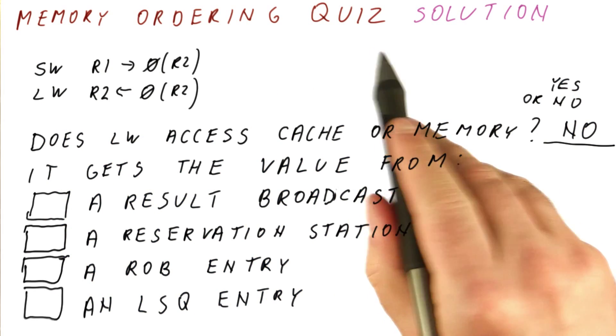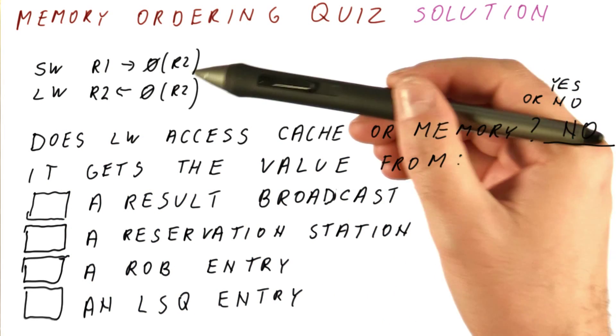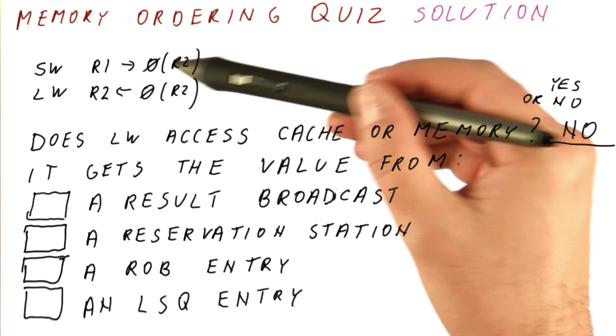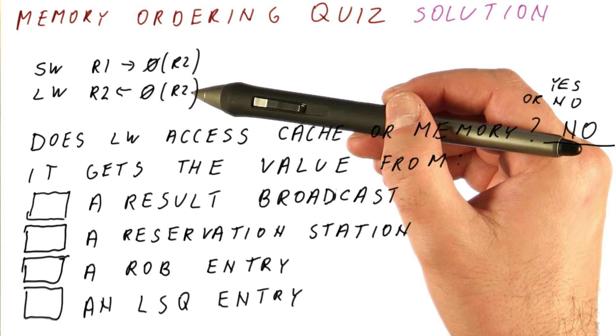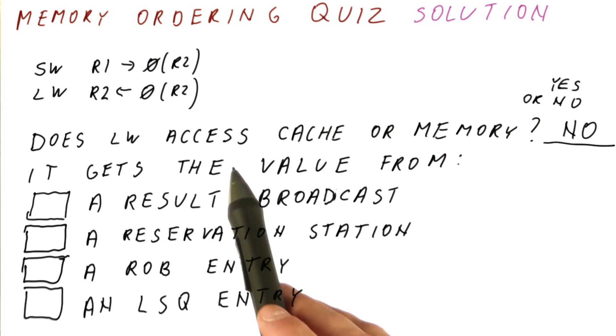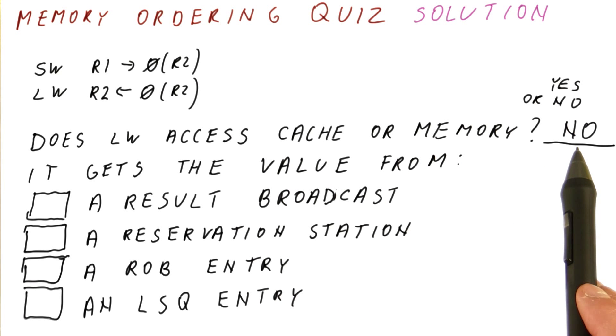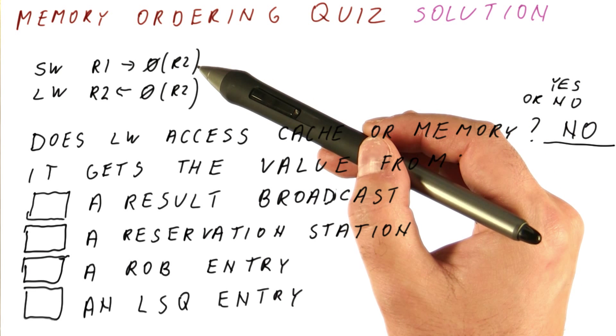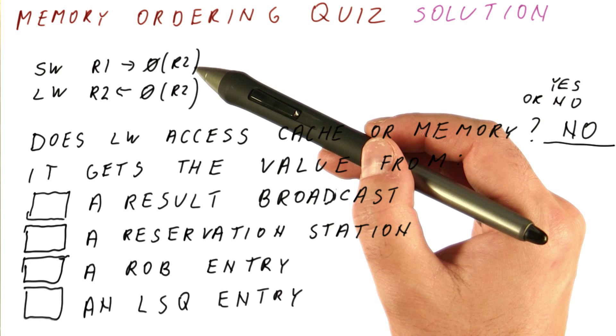Let's discuss the memory ordering quiz solution. In this situation, there is a store and then a load to the same address. The load obviously doesn't go to cache or memory to get its value - it gets it from the store. But where does the store keep its value?